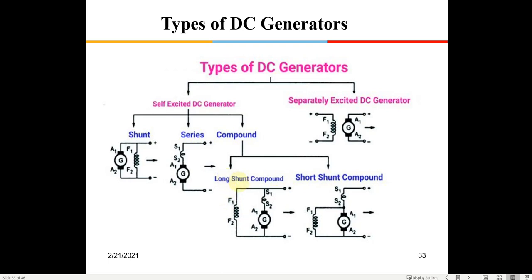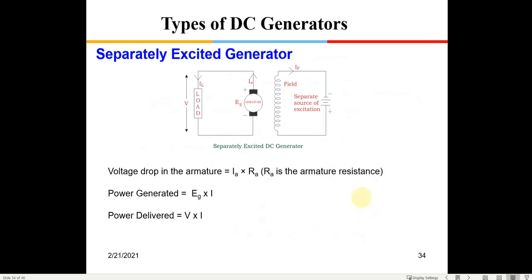Self-excited generators come in several types. A shunt generator has the field coil connected in parallel to the armature output. A series generator has the field coil in series. A compound generator has both series and shunt field coils. In a long shunt compound, the parallel shunt coil is connected after the series coil. In a short shunt compound, the shunt coil is connected directly across the armature. Each type has its own advantages and disadvantages.